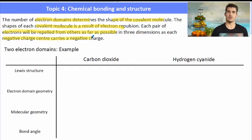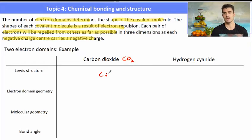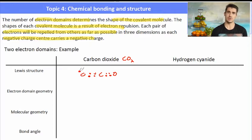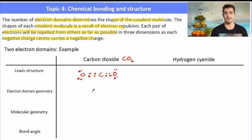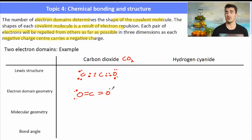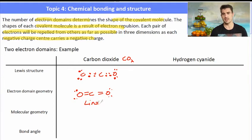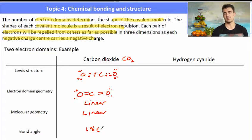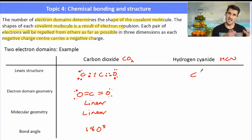Each pair of electrons is repelled as far away as possible from all of the other electrons in the molecule — this is the VSEPR theory. Carbon dioxide has a carbon with two double bonds to the oxygen, and the oxygen has two pairs of non-bonding electrons or lone pair electrons. Its electron domain geometry is linear — the two regions of negatively charged bonding electrons are linear to each other. So the molecular geometry or shape of this molecule is also linear, with a bond angle between oxygen-carbon-oxygen of 180 degrees.